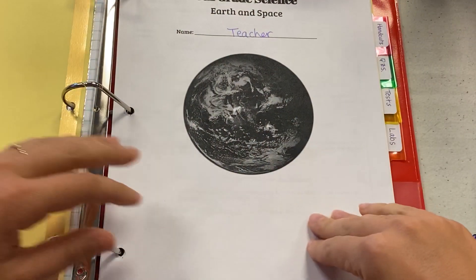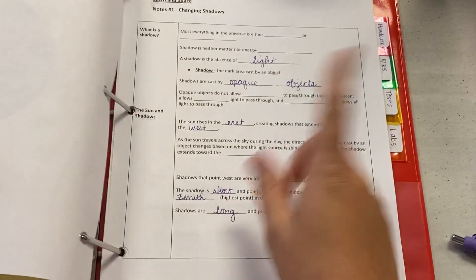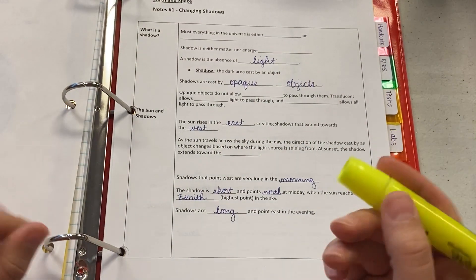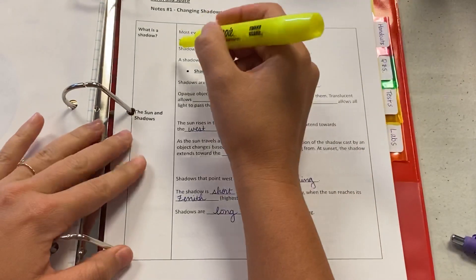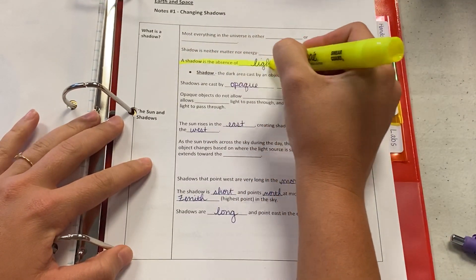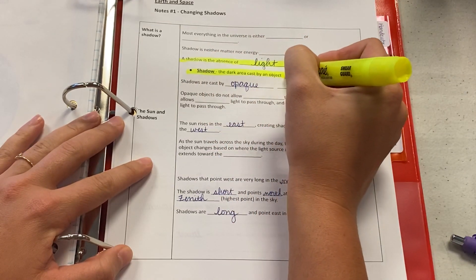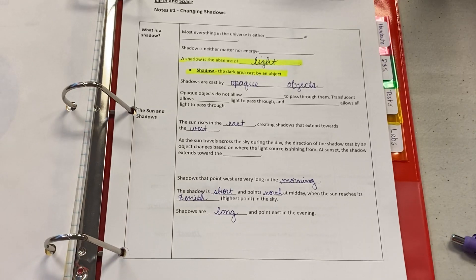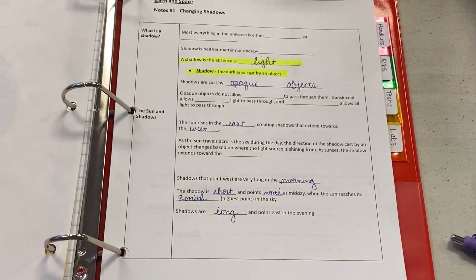All right, going to the notes from notes number one. My notes are not completely filled out, but I filled out what we need to know. The first thing you want to highlight is what a shadow is, that it is the absence of light. You also need to know the definition of shadow, which is the dark area cast by an object. That would be an example of a vocab word, but it's kind of hidden within the notes, which is why we're highlighting it.